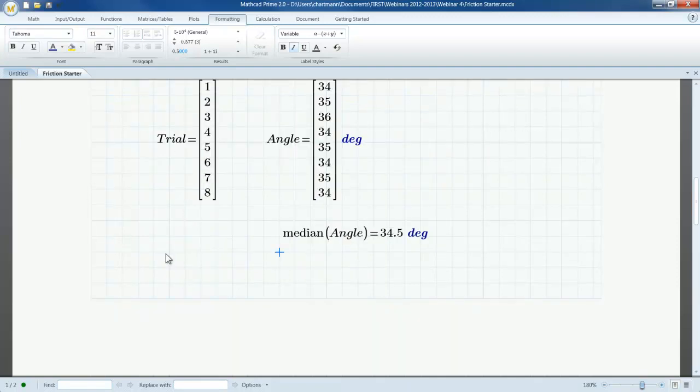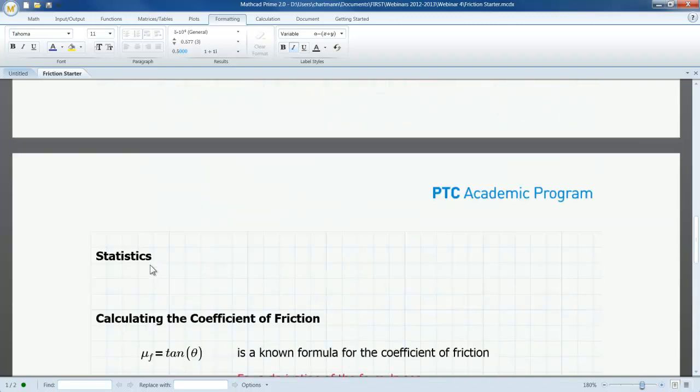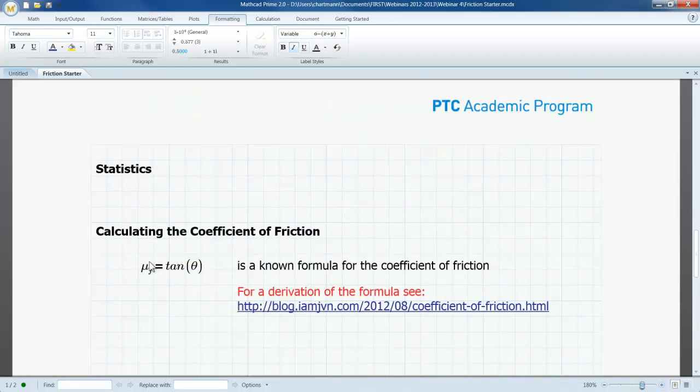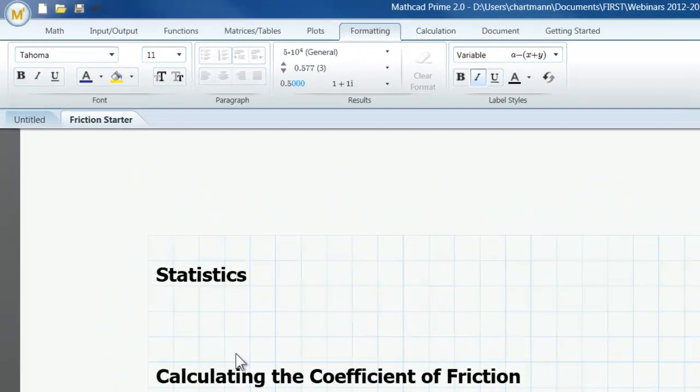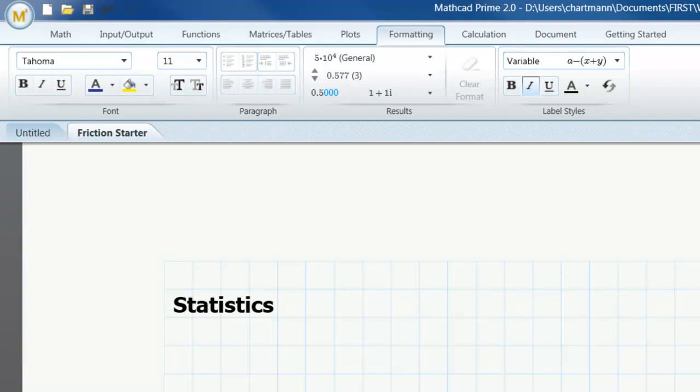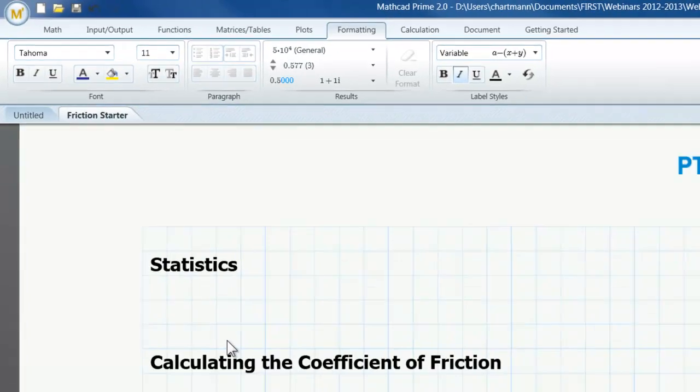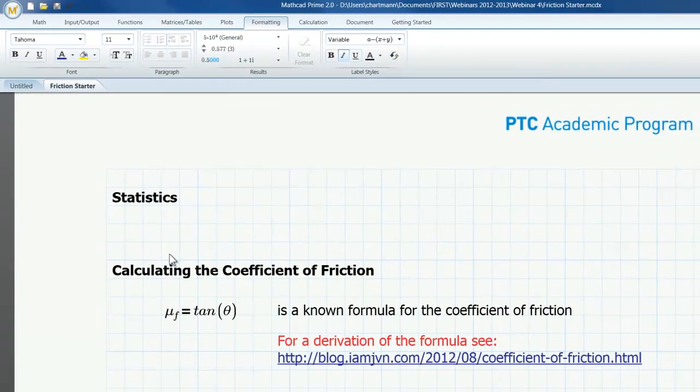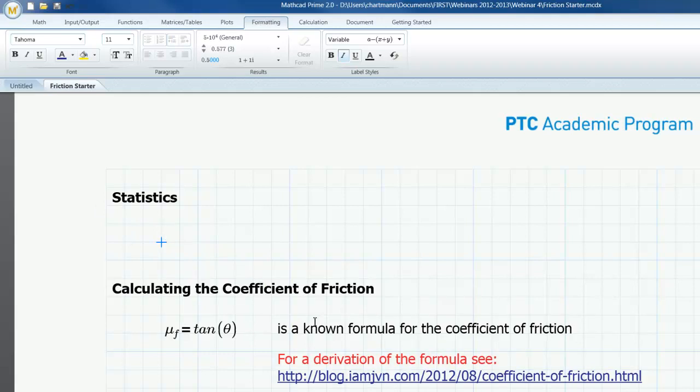In using the angle of slip data that I have in this worksheet, I'm going to calculate statistics for the number of trials, the mean, the sample variance, and the sample standard deviation using built-in functions and operators. I'll then use the mean statistic and the standard deviation to calculate the coefficient of friction as the tangent of alpha, the mean angle measurement. Using the standard deviation, I will then establish a band around the mean that we can use if we want to have a more conservative or a more liberal coefficient of friction. The formula for tangent is based on a known method for calculating coefficient of friction. If you'd like to see a derivation of it, you can go to this URL.